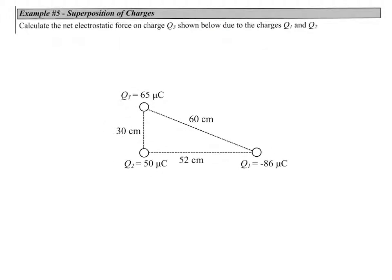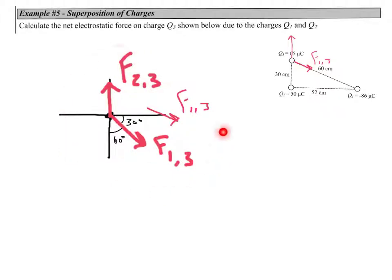Looking at the forces on Q3, Q2 is a positive charge and Q3 is also a positive charge, so we end up with a force directed away from Q2. For force one on three, Q3 is positive and Q1 is negative, so that's an attractive force directed toward Q1. A simplified free body diagram shows force one on three and force two on three, and using geometry we can see this gives a 60-degree angle and a 30-degree angle.